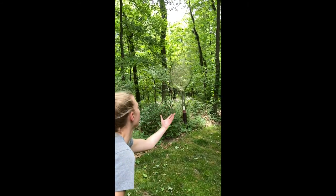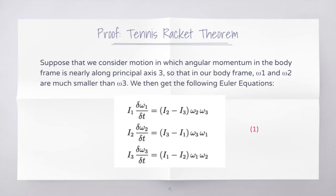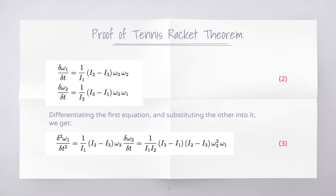The angular velocity moves away from the axis exponentially and the motion becomes really complicated. Suppose we consider the motion in which the angular momentum of the body frame is nearly along principal axis 3, so that in our body frame, omega 1 and omega 2 are much smaller than omega 3. Our Euler equations will look like this. Given our initial conditions, we can ignore the time dependence of omega 3, because its time derivative is proportional to the product of the two small values, omega 1 and omega 2. We are able to assume this because the tennis racket has three principal moments that are very different from each other. If we want to treat omega 3 as a constant, the other two Euler equations are linear in the small quantities omega 1 and 2, and we can write them as equation set 2.